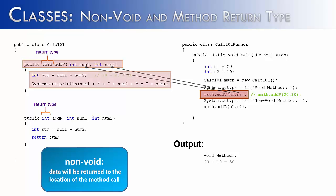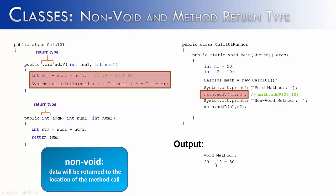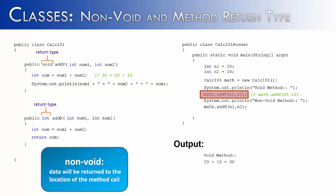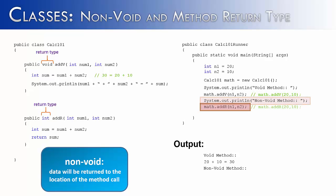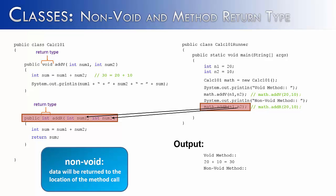Our void method is going to send the two values 20 and 10 over to the addV method. Once over there, the method is going to add the two numbers together and print out '20 plus 10 equals 30' using a System.out.println statement. Next it's going to come back to the main method. Now that the call to math.addV is done, it's going to continue on and print out 'non-void method' in our output. Once that's accomplished, we're going to call the addR method.